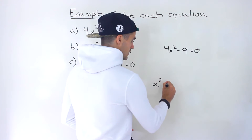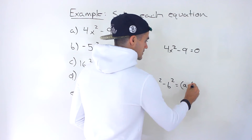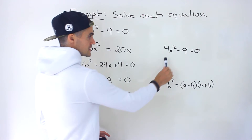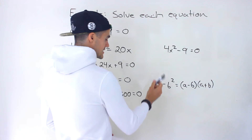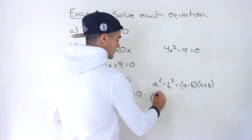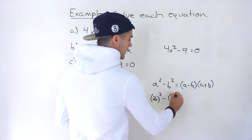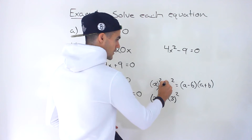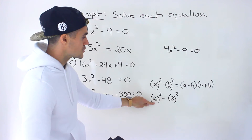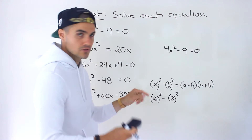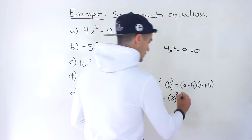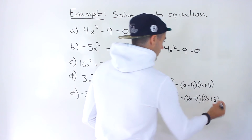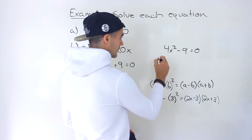This is a difference of squares. Remember a difference of squares in general takes the format a squared minus b squared equals (a minus b)(a plus b). We can rewrite 4x squared as (2x) squared and the 9 as 3 squared. So the A value is 2x, the B value is 3, and plugging into the formula you get (2x minus 3)(2x plus 3). That's what this factors to.